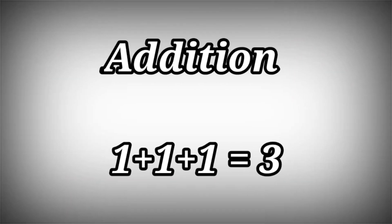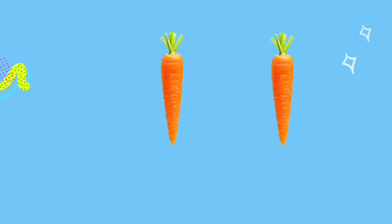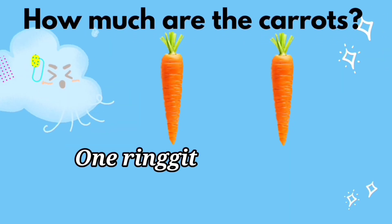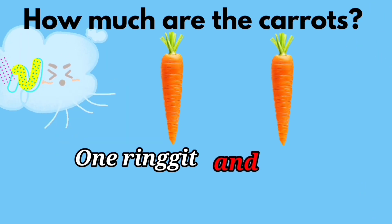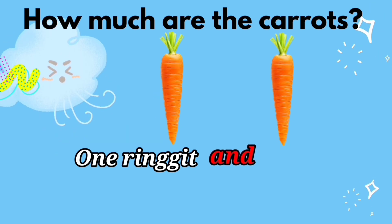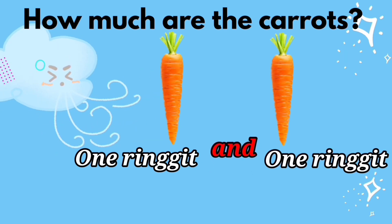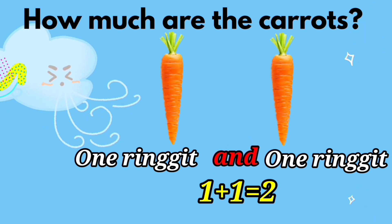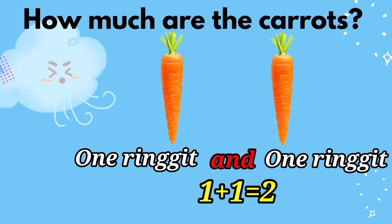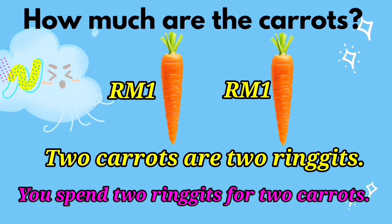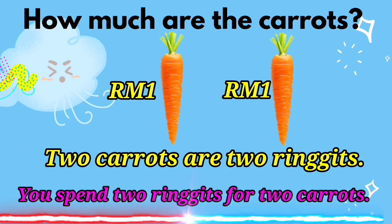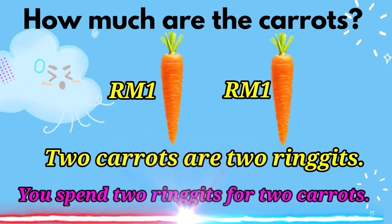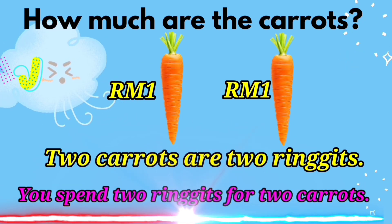Addition: one and one and one is three. How much are the carrots? One ringgit and one ringgit — two ringgits. One and one equals two.